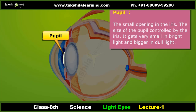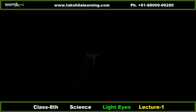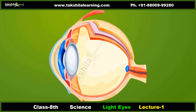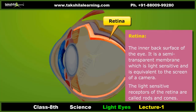Pupil: The pupil is the small opening in the center of the iris. It allows light to enter the retina and appears black because most of the light entering the pupil is absorbed by the tissues inside the eye. The size of the pupil is controlled by the iris — it gets very small in bright light and bigger in dim light to allow the appropriate amount of light to enter.